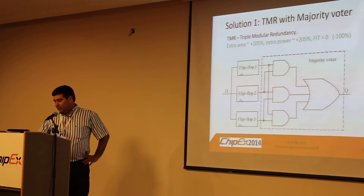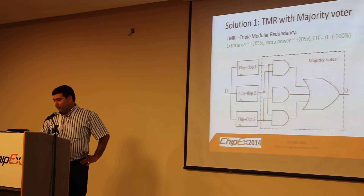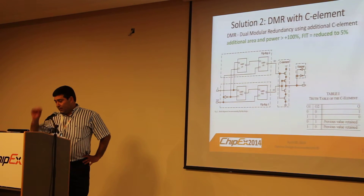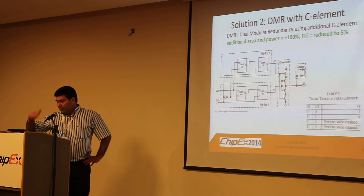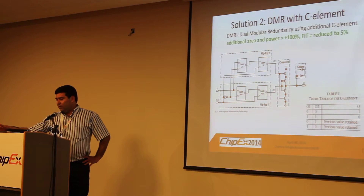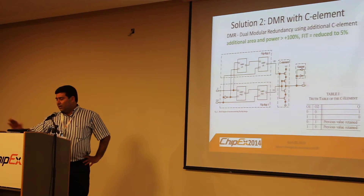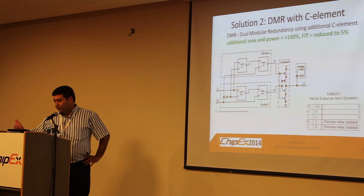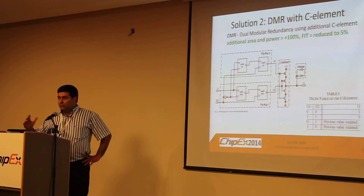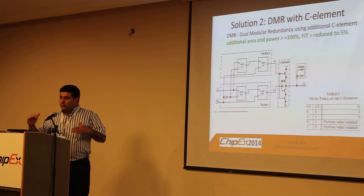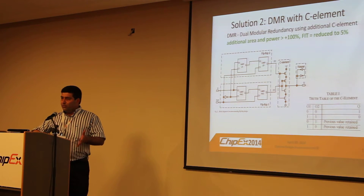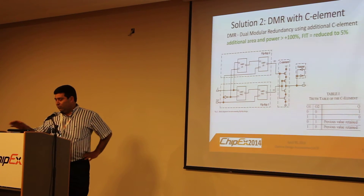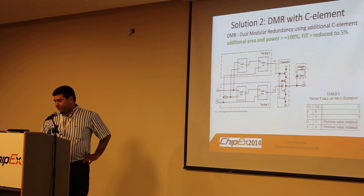Another method uses DMR with a C-Element. This one has 100% additional silicon and power per flop and reduces the FIT rate to 5%. So we can choose this methodology or that methodology based on how much we want to lower the FIT rate and how much we can afford to pay in silicon and power.